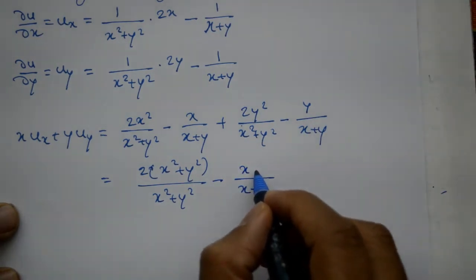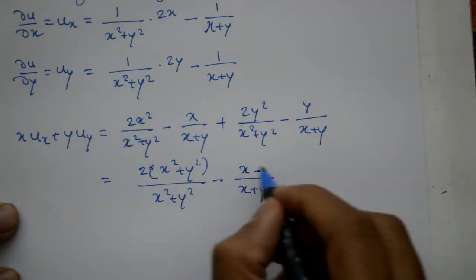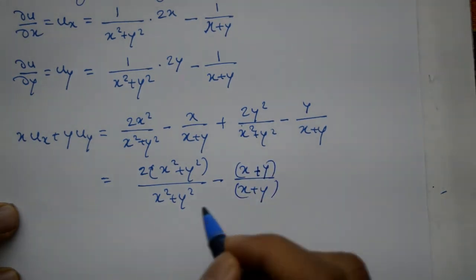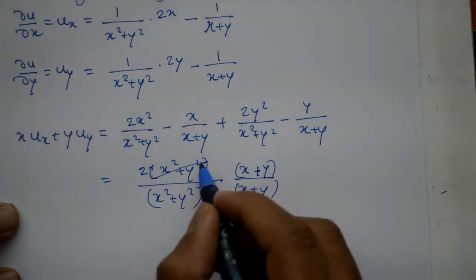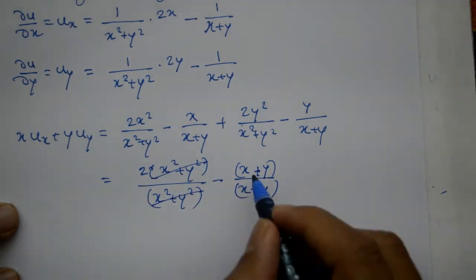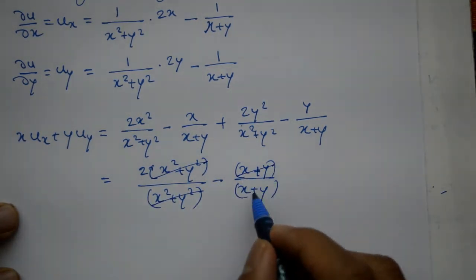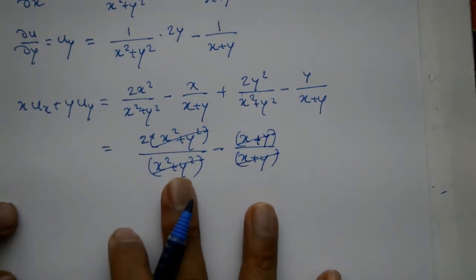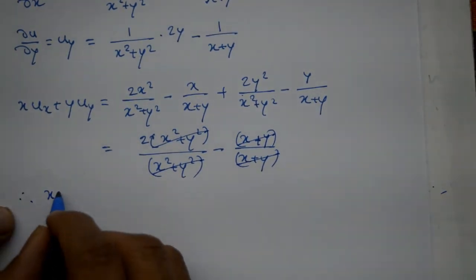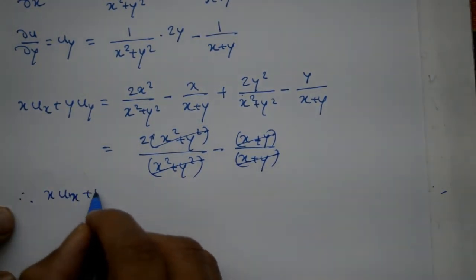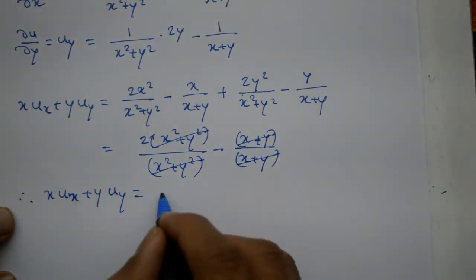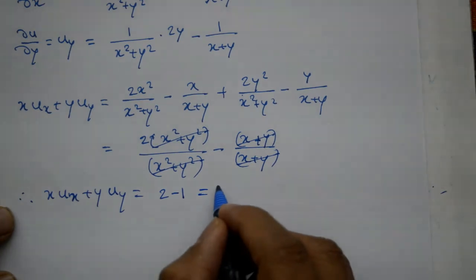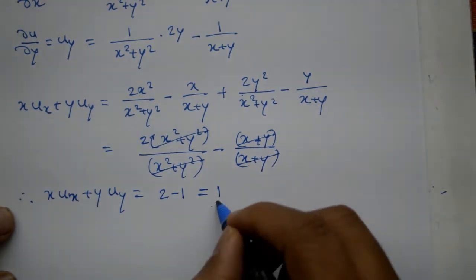Numerator me minus bahar lene to x plus y ho jai ga. Now x square plus y square divided by x square plus y square cancel ho jai ga, x plus y divided by x plus y cancel ho jai ga. Therefore x into dou u by dou x plus y into dou u by dou y equal to 2 minus 1, that is equal to 1. This is the required right hand side.